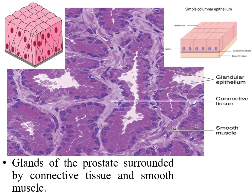The prostate gland is lined either by simple columnar epithelium or by pseudostratified epithelium, depending on the activity of the cells. If highly active, the lining is pseudostratified; if normal activity, it is simple columnar epithelium. The acini are surrounded by smooth muscle fibers present in the fibromuscular trabeculae between the acini of the prostatic gland.